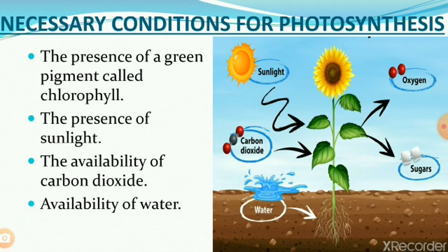What are the necessary conditions for photosynthesis to take place? There are four conditions: first, the presence of a green pigment called chlorophyll; second, the presence of sunlight; third, the availability of carbon dioxide; and fourth, the availability of water. If all four conditions are satisfied, only then does photosynthesis take place in the green leaves.